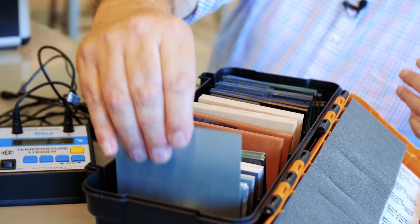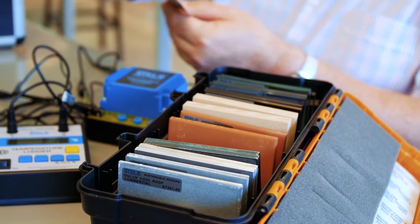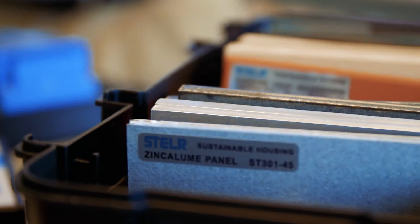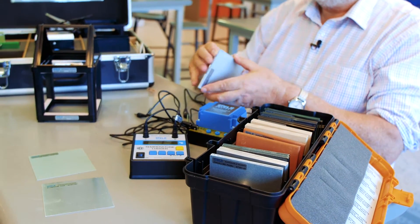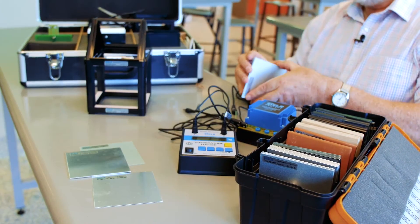In the teacher kit we've got various samples. This one is zinc-a-loom, that's just a standard thin aluminium roof they can put in, thick aluminium, and then we have some sticky parts from Dulux paint.